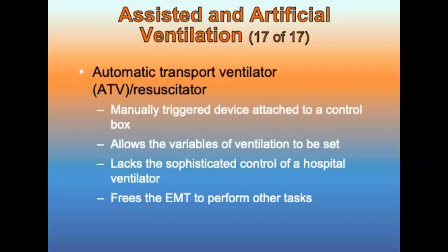Automatic transport ventilators (ATVs) are manually triggered ventilation devices attached to a control box that allows variables of ventilation to be set. A BVM and mask should always be ready as backup in case of ATV failure. Most models have adjustments for respiratory rate and tidal volume. The pressure relief valve may lead to hypoventilation, and constant reassessment of the patient is necessary to assess for full chest recoil.